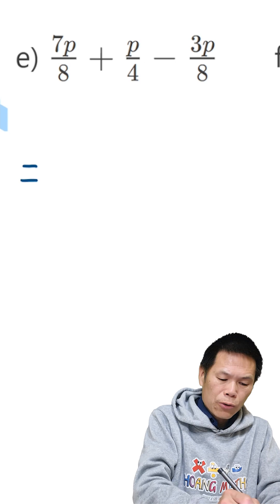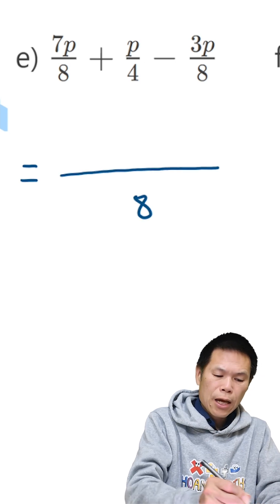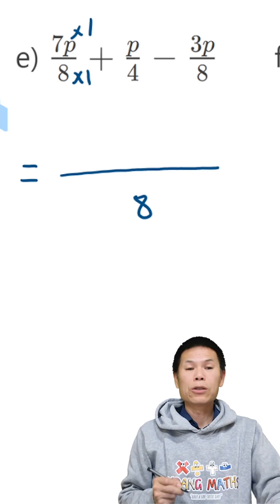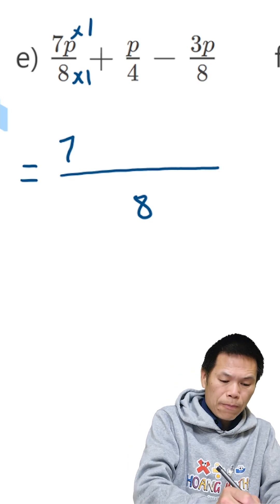So I write equal to, I put that 8 first. From 8 to 8, I time 1. So top time by 1. So therefore, it's 7P.